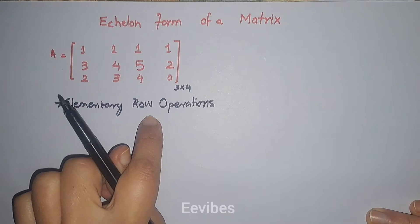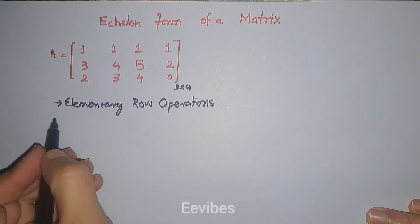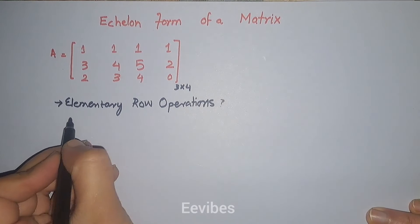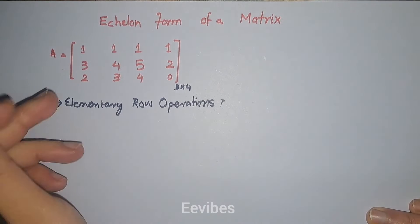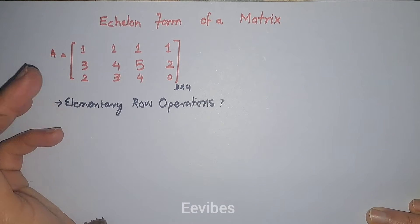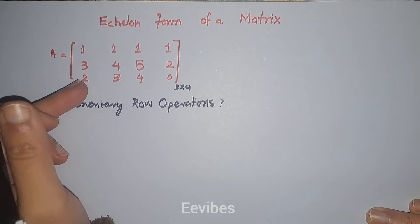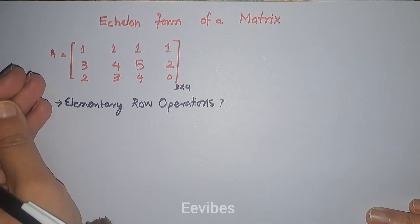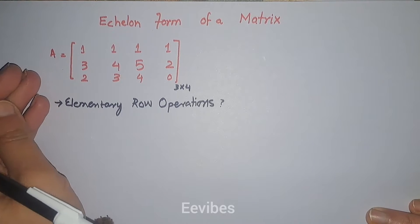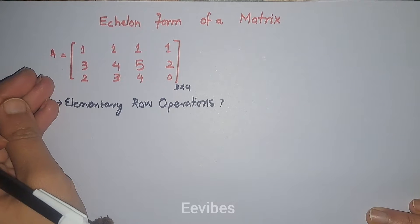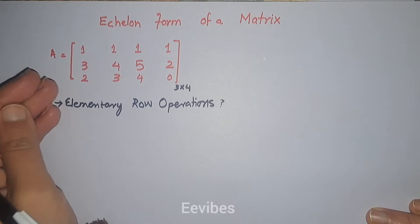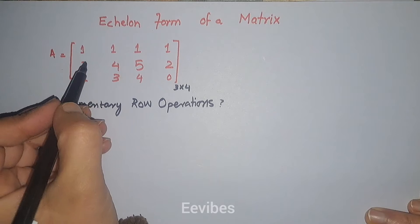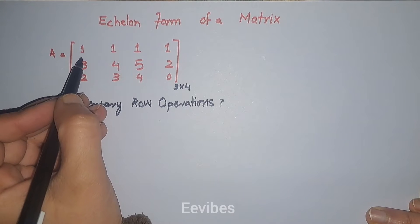In order to find the echelon form of a matrix, we will perform elementary row operations. We can add or subtract any two rows, we can scale any row of a matrix by a constant factor or constant multiplier, and we can add or subtract the multiple of one row into another row.